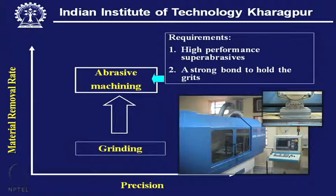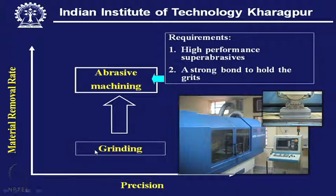In this figure, what we see is that on one side we have material removal rate, and on the other side it is the precision of manufacturing. The cutting tool is employed here to get a very high material removal rate, but not as high a precision as that which is provided by grinding.